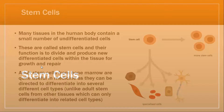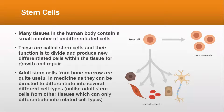The last topic of your cell structure chapter is stem cells. Many tissues in the human body contain a small number of undifferentiated cells — cells which have not yet been specialized. These are called stem cells, and their function is to divide and produce new differentiated cells within the tissue for growth and repair.